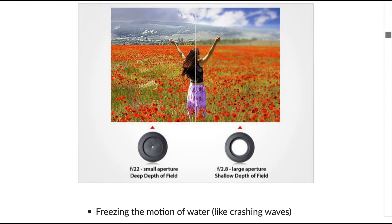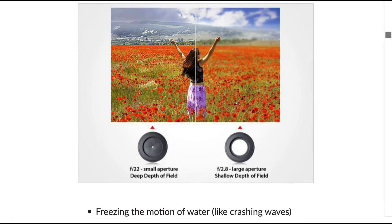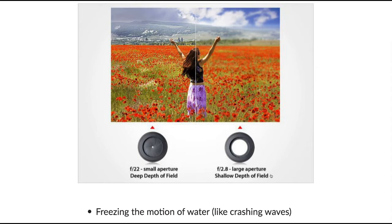Deep depth of field is usually what most people use for landscape photography — you want to see your foreground, middle ground, and background all nicely in focus. For portrait photography, a shallow depth of field is more often used because it makes your eye focus in on the central figure.